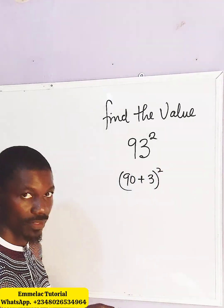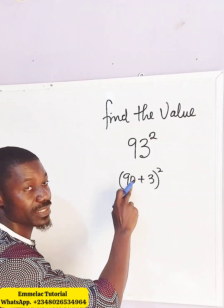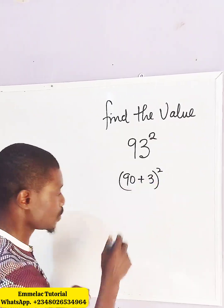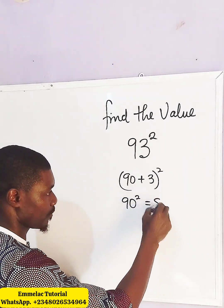The next thing we need to do is take 90 raised to the power of 2. 90 raised to the power of 2 will give us 8100, because 9 raised to the power of 2 gives us 81, then two zeros.